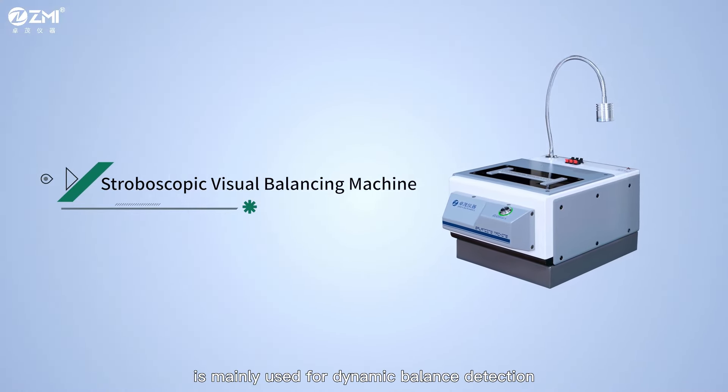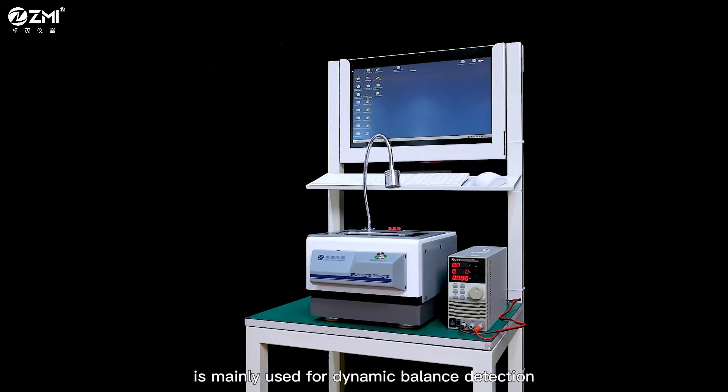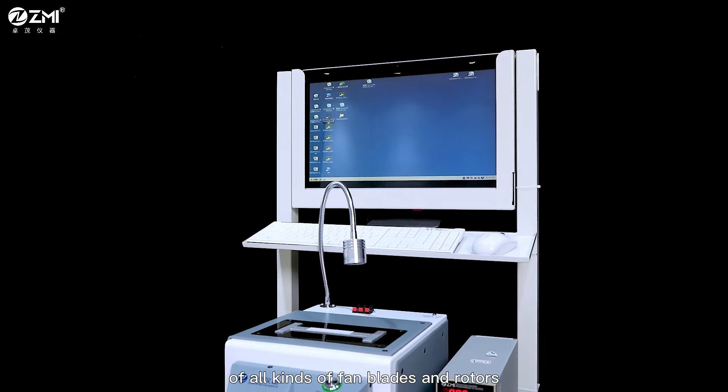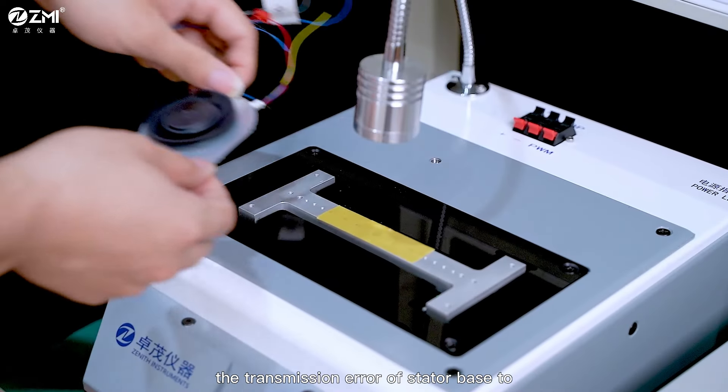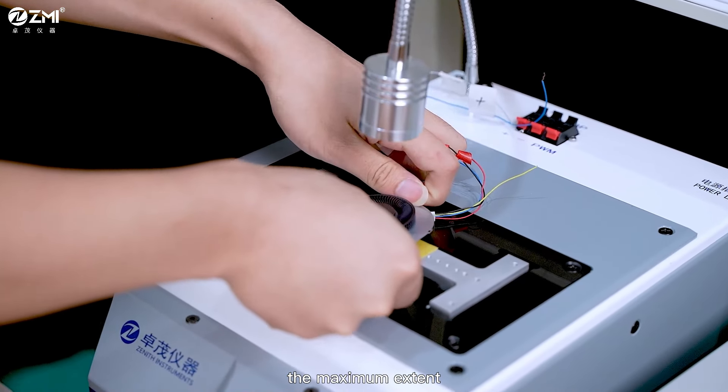Stroboscopic visual balancing machine is mainly used for dynamic balance detection of all kinds of fan blades and rotors. High precision spindle is adopted to eliminate the transmission error of stator base to the maximum extent.